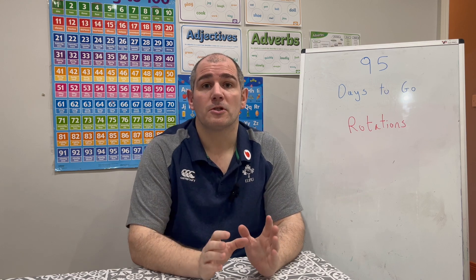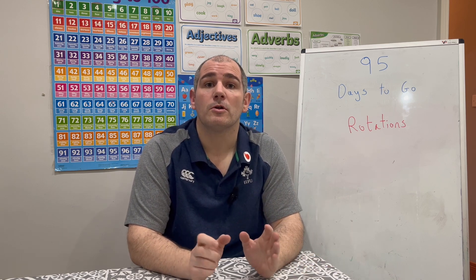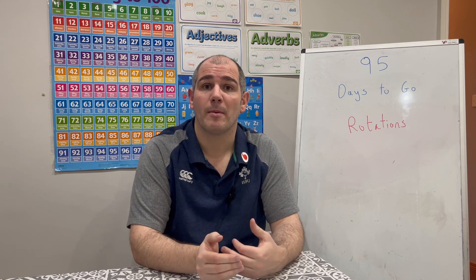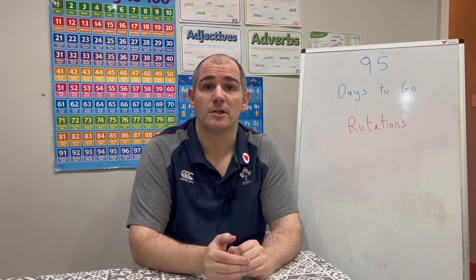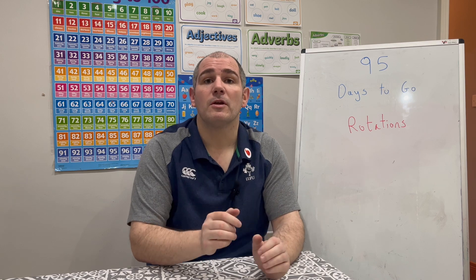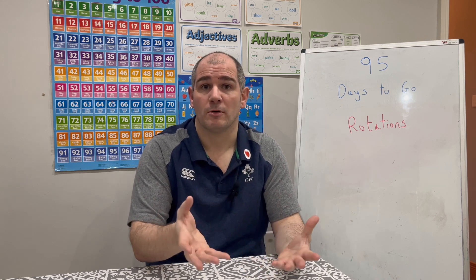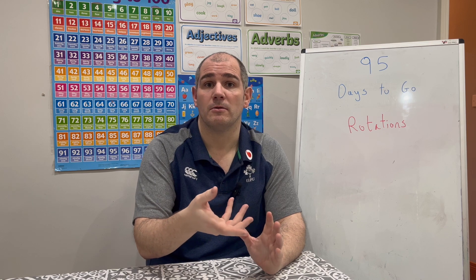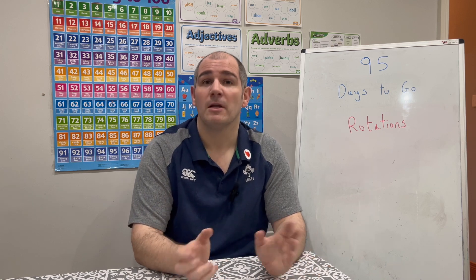Whenever you're doing a rotations question, make sure you've got the right equipment. You're going to need your pencil and rubber, just in case you make a mistake. But also you may need some tracing paper. Remember that you can ask for tracing paper in the GCSE Maths exam. In this video, we're going to go through how to rotate shapes on a grid, given a centre of rotation and the number of degrees, whether clockwise or anticlockwise.